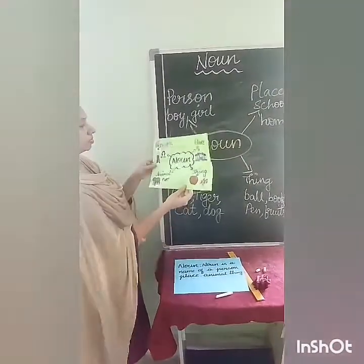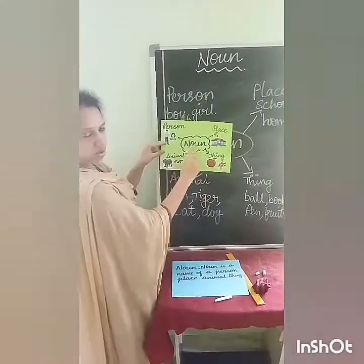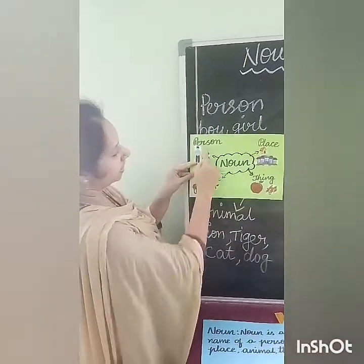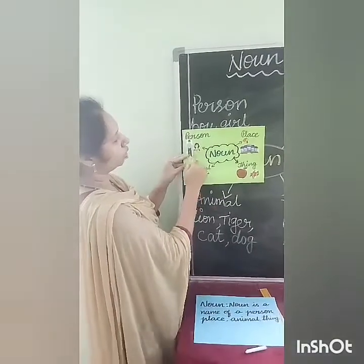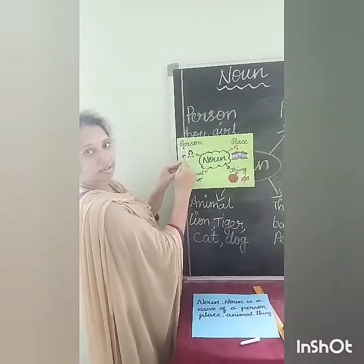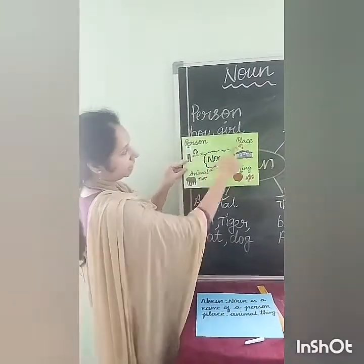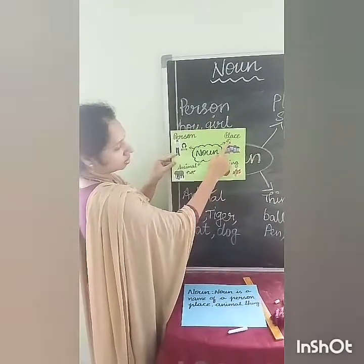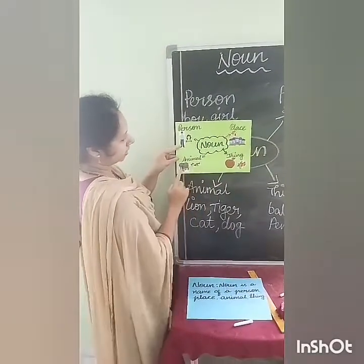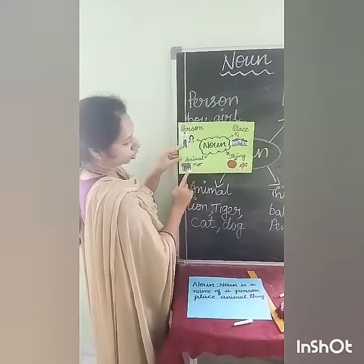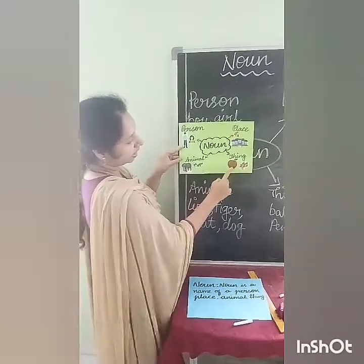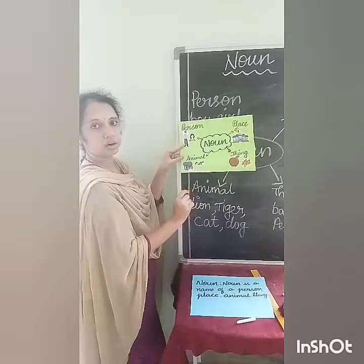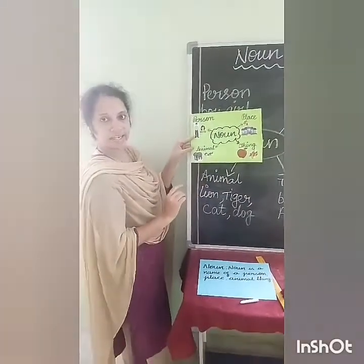See here. Noun: person — boy, girl, man, woman. Place — school, home. Animal — elephant, cat, dog. Thing — apple, flowers, bat, ball. These all come under the examples of a noun.